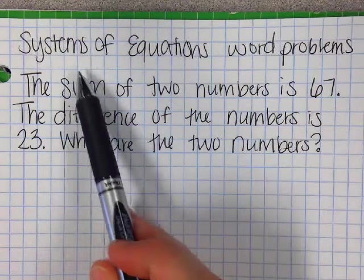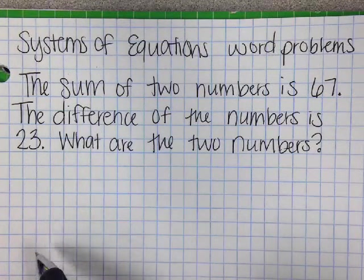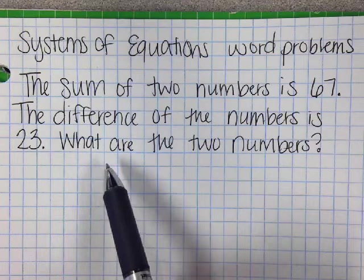Remember, a system is when you have two unknowns and you have two equations, or more than one unknown, I should say.